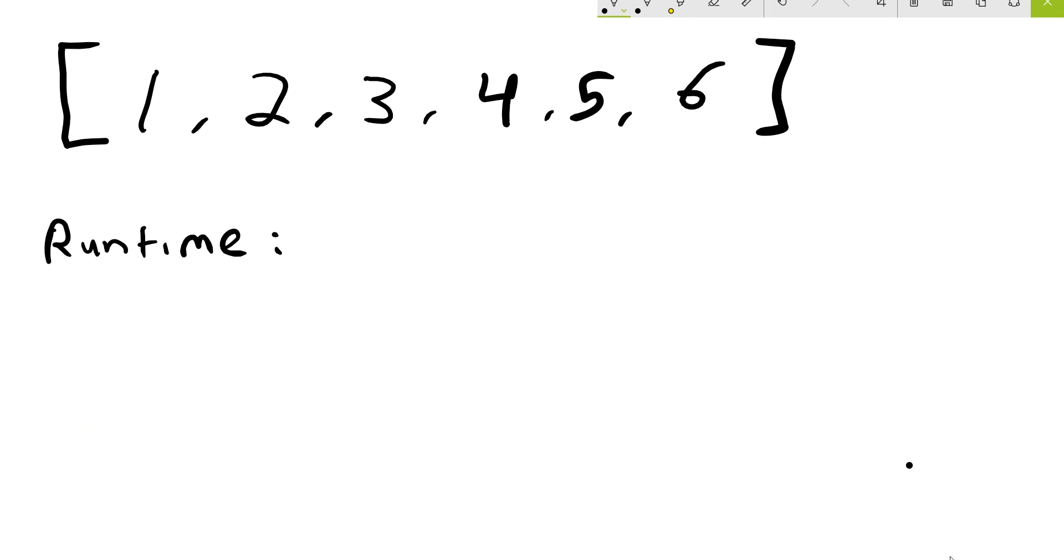Let's quickly go over the runtime of this algorithm. Well, in the example I showed, we had 6 numbers in our array. And we're required to go through 6 iterations of the algorithm. Let's imagine we didn't just have 6, but we had an arbitrarily long array. And let's call this size of this array n.